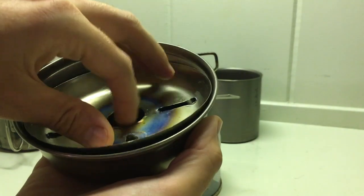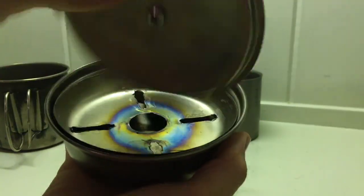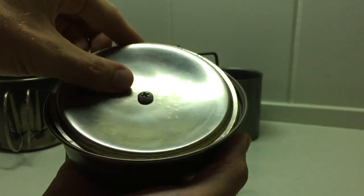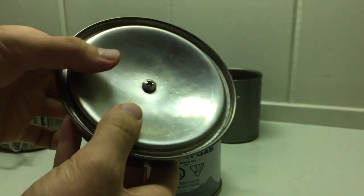So the windscreen just goes inside the lid frying pan there. And then I turn the lid upside down, so that little wooden handle can go through the hole in the windscreen.